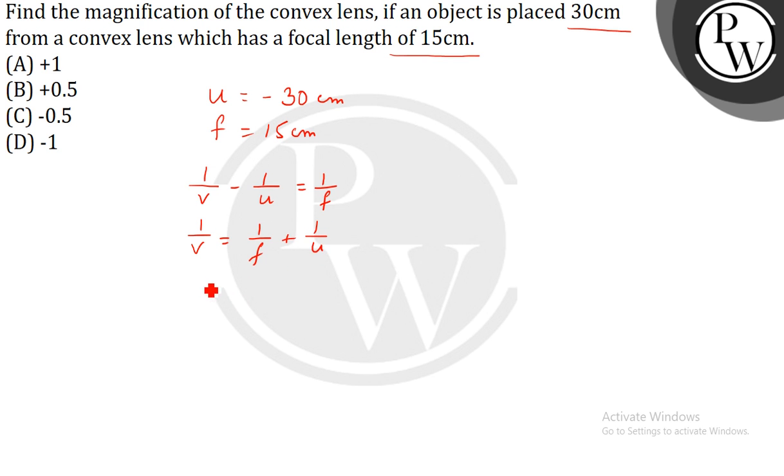1 by V is equal to 1 by 15 plus 1 by minus 30. So, 1 by V equals 2 minus 1 by 30, or we can say V equals 30 cm.